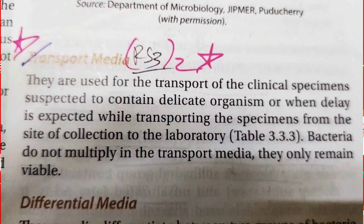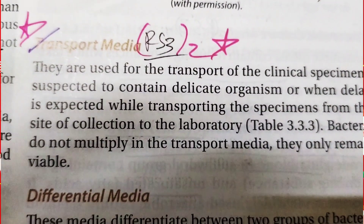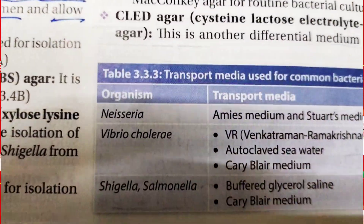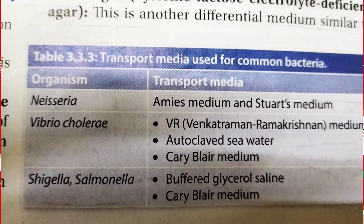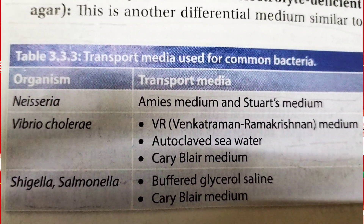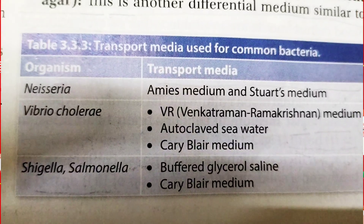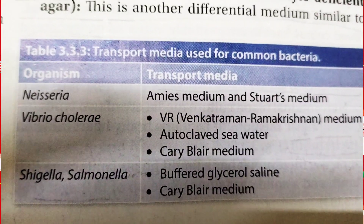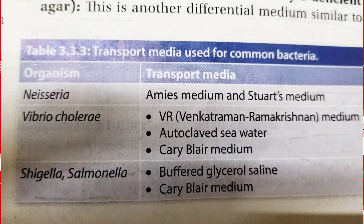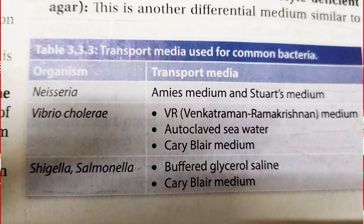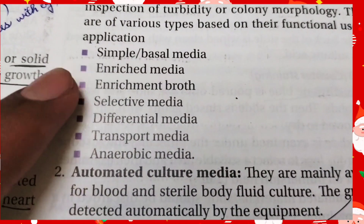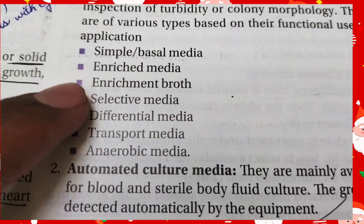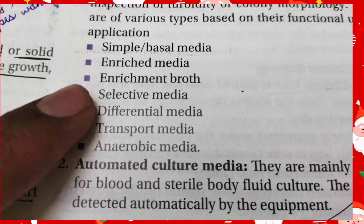Transport media helps in the transport of microorganisms from the specimen collection site to the diagnostic laboratory. Transport media examples include: for Neisseria — IMS medium and Stuart's medium; for Vibrio cholerae — Venkataraman-Ramakrishna medium and Cary-Blair medium; for Shigella and Salmonella — buffered glycerol saline and Cary-Blair medium. So far we have covered simple basal media, enriched media, enrichment broth, selective media, and now we move on to differential media.